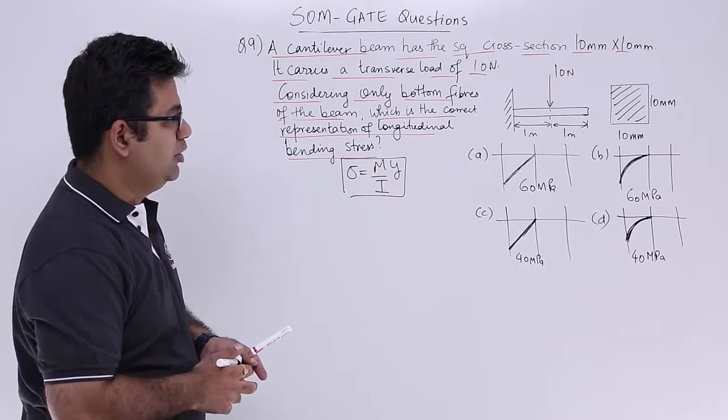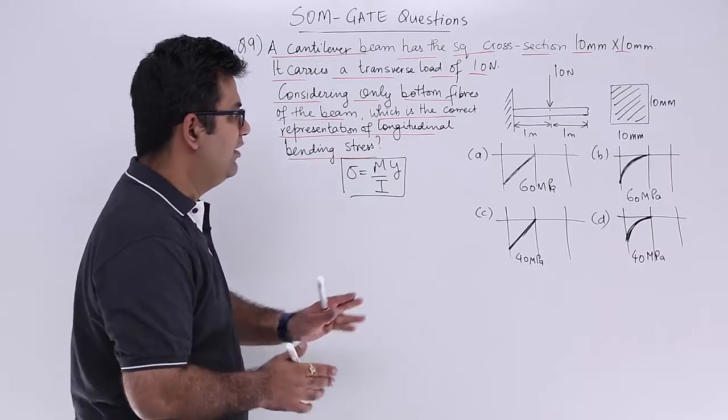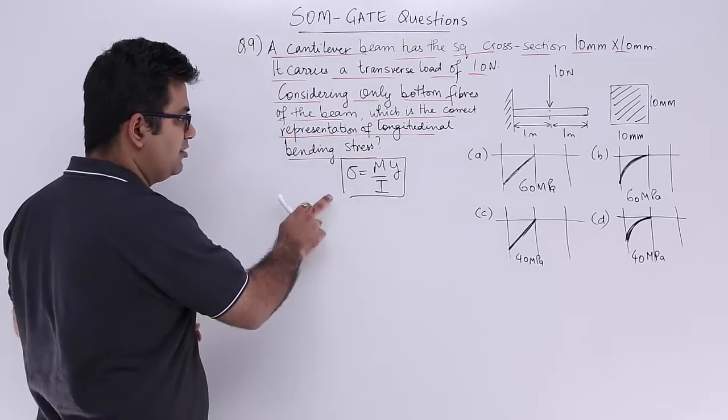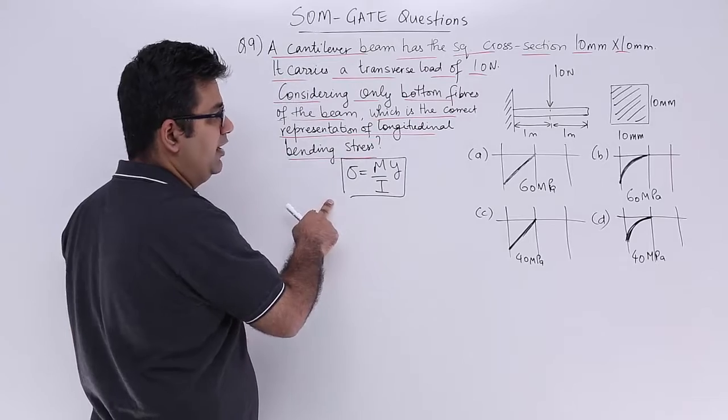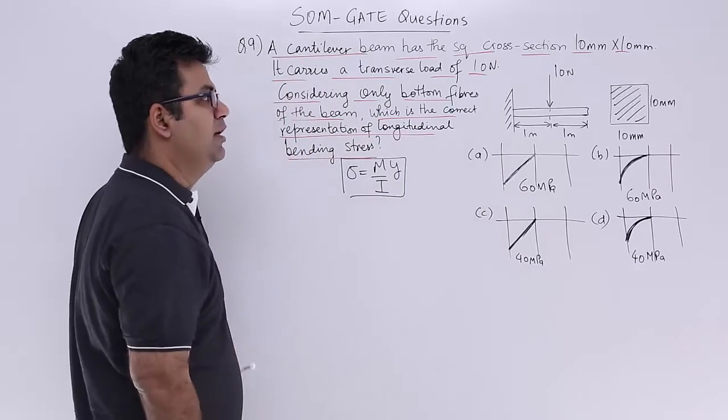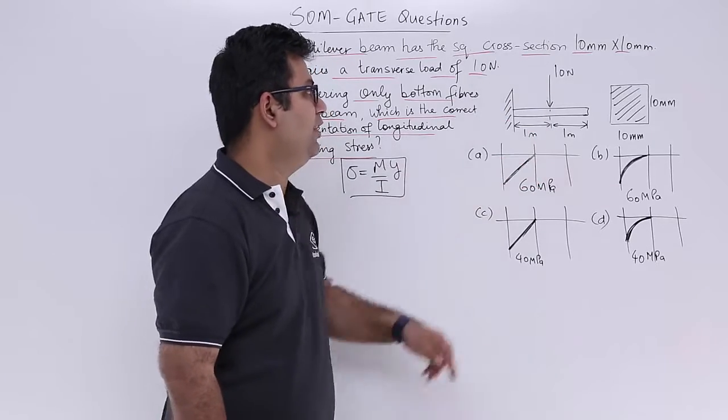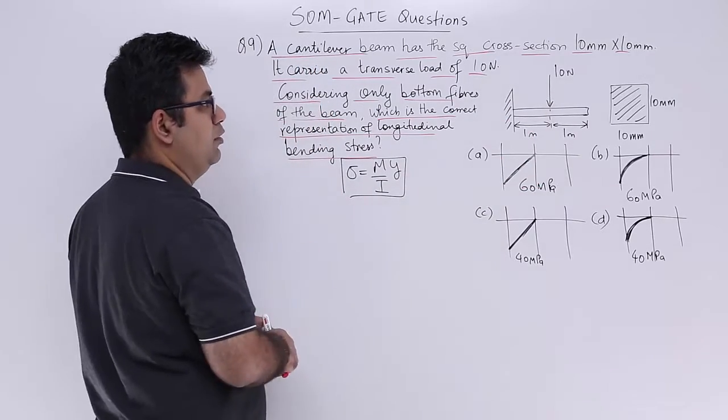Now in this scenario you have 4 choices and you have to tell which one of these is the representation of the variation of bending stress with respect to this cantilever beam which is loaded at the center of the mid span with a load of 10 newtons with a square cross section.